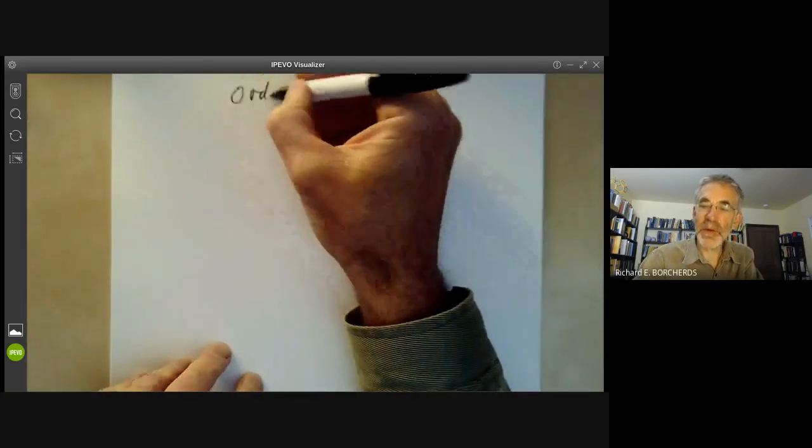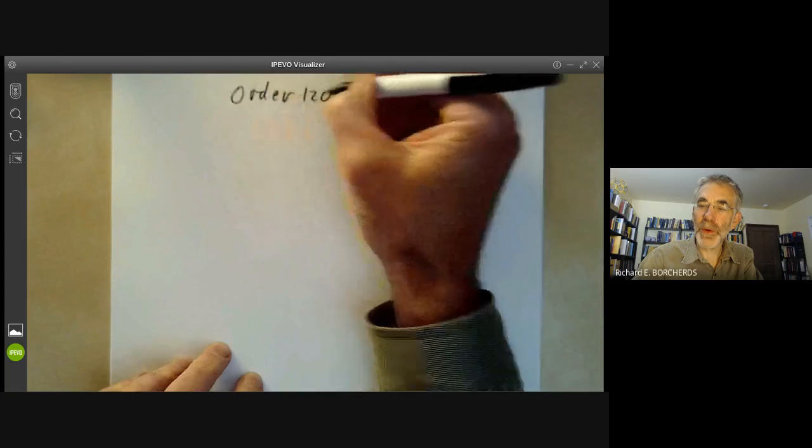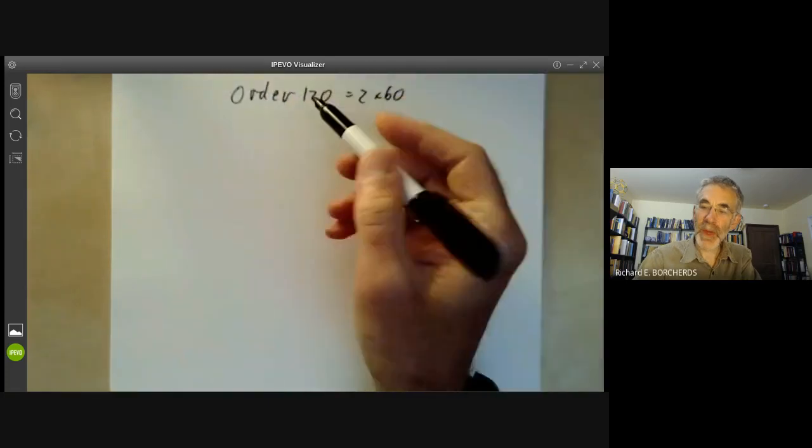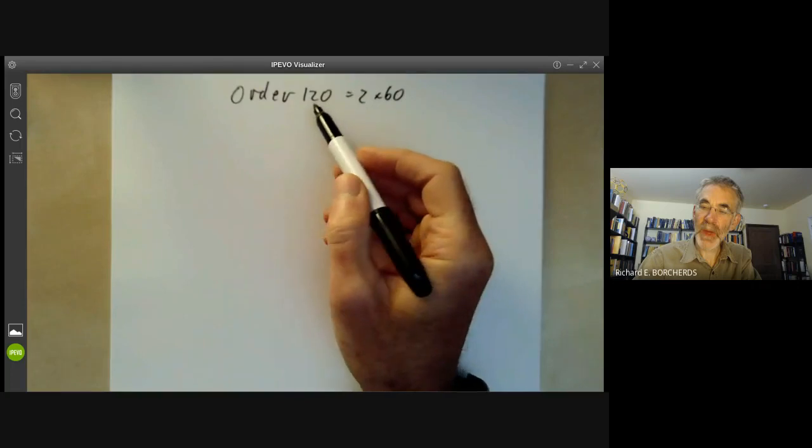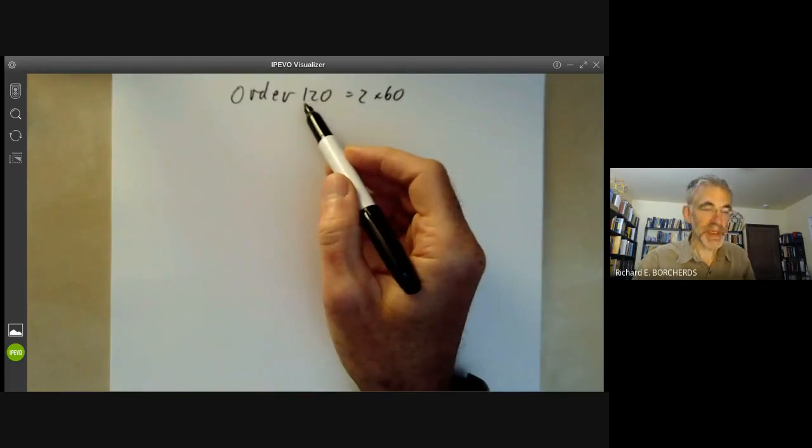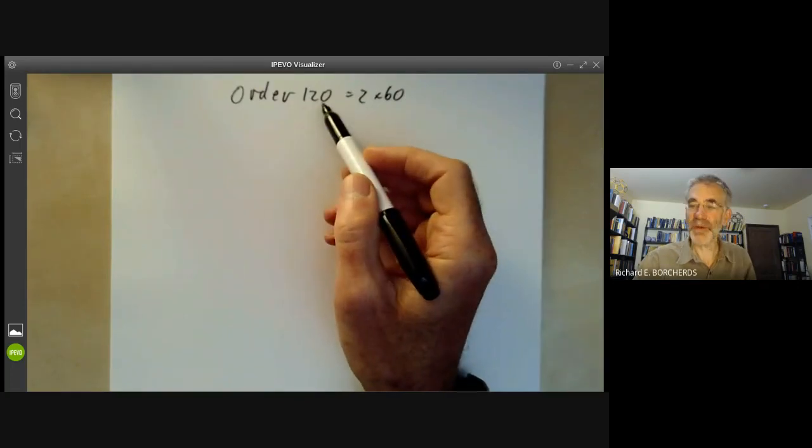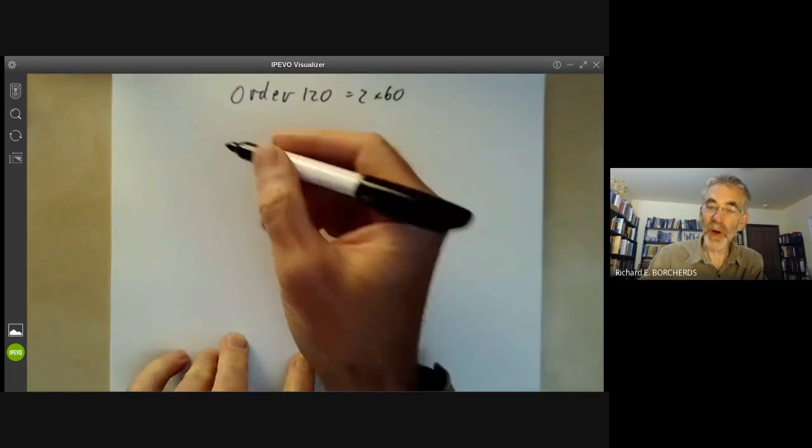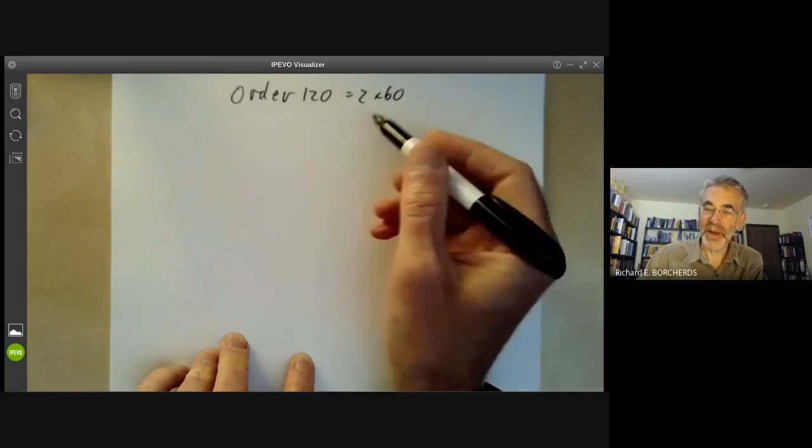So first we'll look at order 120 which is 2 by 60. There are plenty of groups of order 120 but we're only going to be interested in the ones that involve the icosahedral group of order 60 and there are four obvious ways to write down an interesting group of order 120.